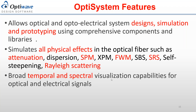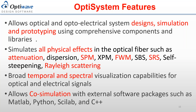OptiSystem has a huge library of visualizers, which allow you to monitor signals everywhere in the system, including in the time domain or spectral domain, as well as binary or memory signals. OptiSystem also has the advantage that it can operate and communicate with other software like MATLAB, Python, Scilab, and C++. You can write your own code in components and then work with those codes within OptiSystem.